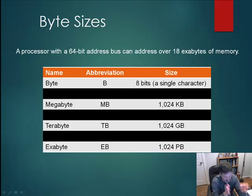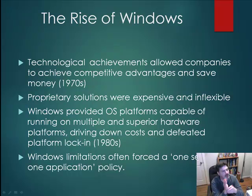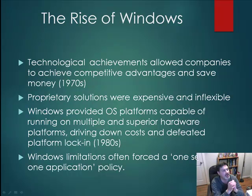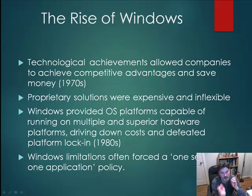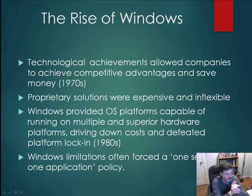Windows really is a driving force in why we virtualize today. Companies began to identify technological achievements as a way of achieving competitive advantage over their competitors while saving money. This really began in the 1970s when companies looked at technology as a solution for saving money. The only problem was that in the 1970s there were a lot of proprietary solutions — they were not standardized. In the IT world today, we associate proprietary solutions with very expensive and very inflexible solutions — the more proprietary the solution, the more expensive and inflexible it tends to be.